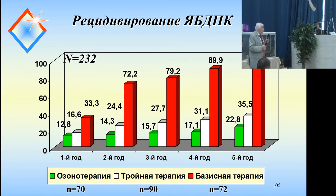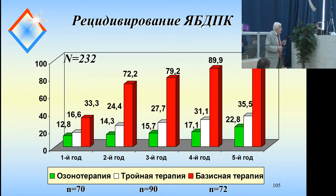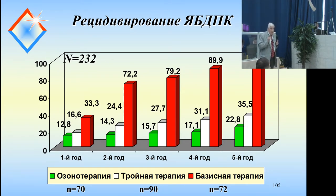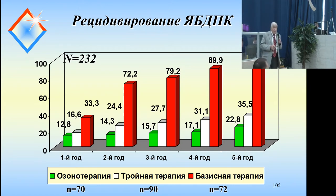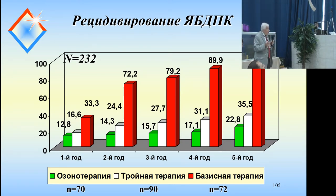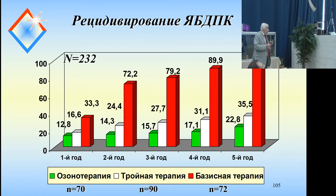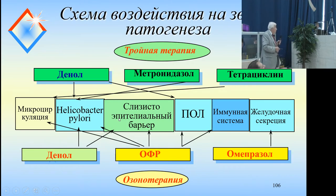The most interesting finding is the recurrence rate for the large bowel. You can see the green indicators here: first year 12%, second year 14%, third year 15%, fourth year 17%, fifth year 20% to 28% — so approximately 22% recurrence within five years with ozone therapy. If we use basis therapy, we see much greater numbers as shown by the red columns — approximately 75–80% recurrence. So ozone therapy clearly takes first place.